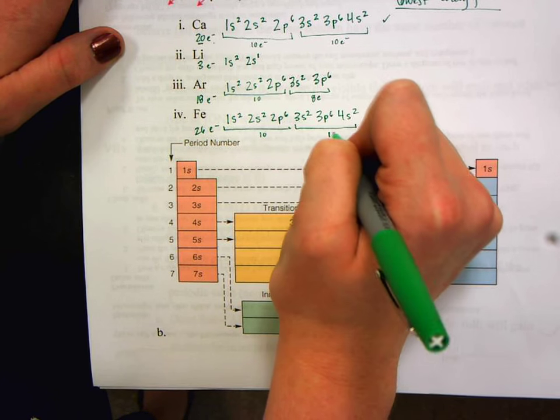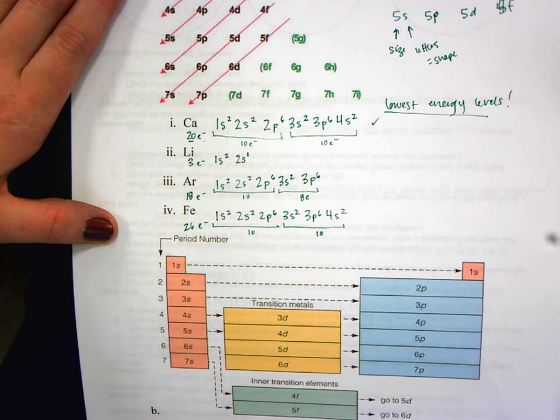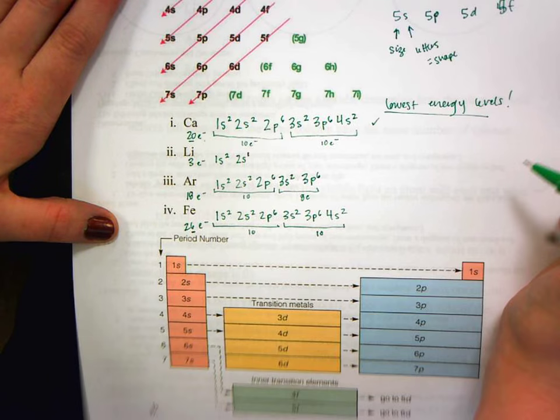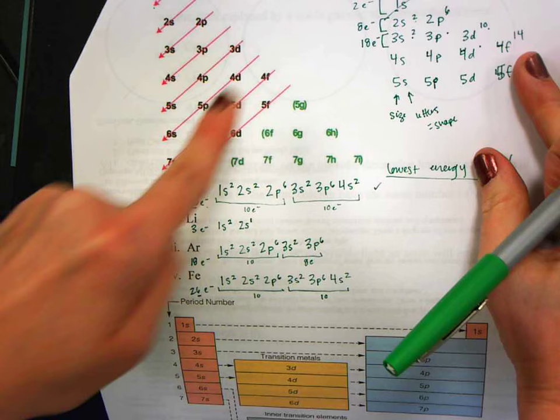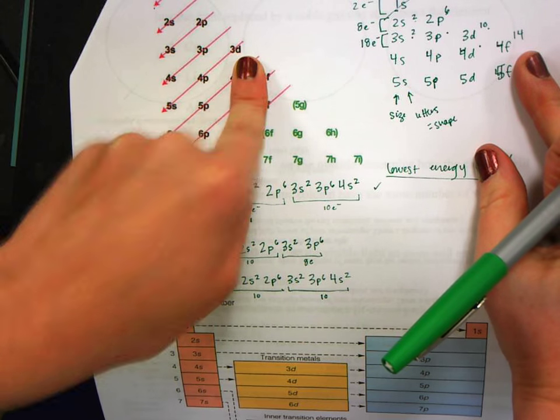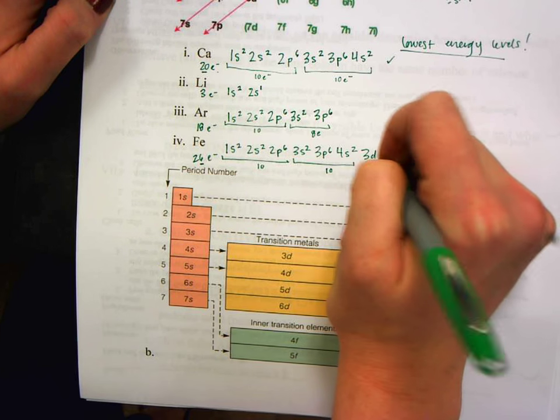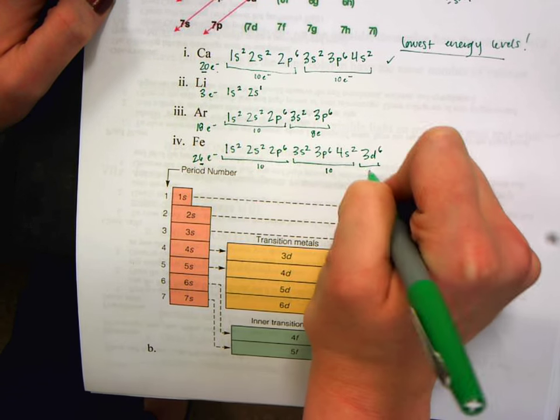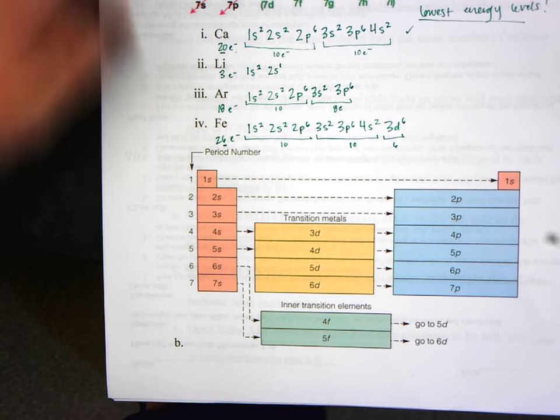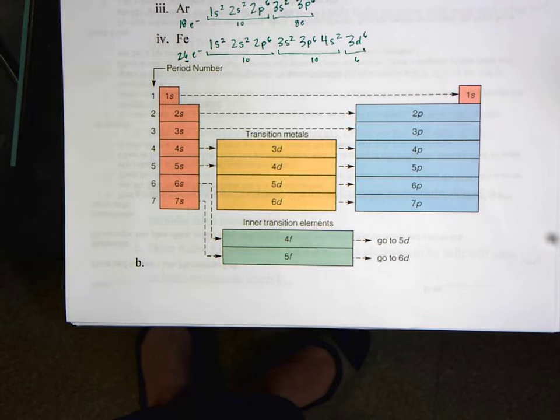So I'm at 20 electrons that I've placed so far. But I'm still not done. I've still got 6 more to place. So I'm here at 4s. I've got to start a new diagonal line. And for the very first time, I'm going to use a d. 3d. And since d can hold 10, I've got 6 electrons left. So I'm going to put 6 electrons there.